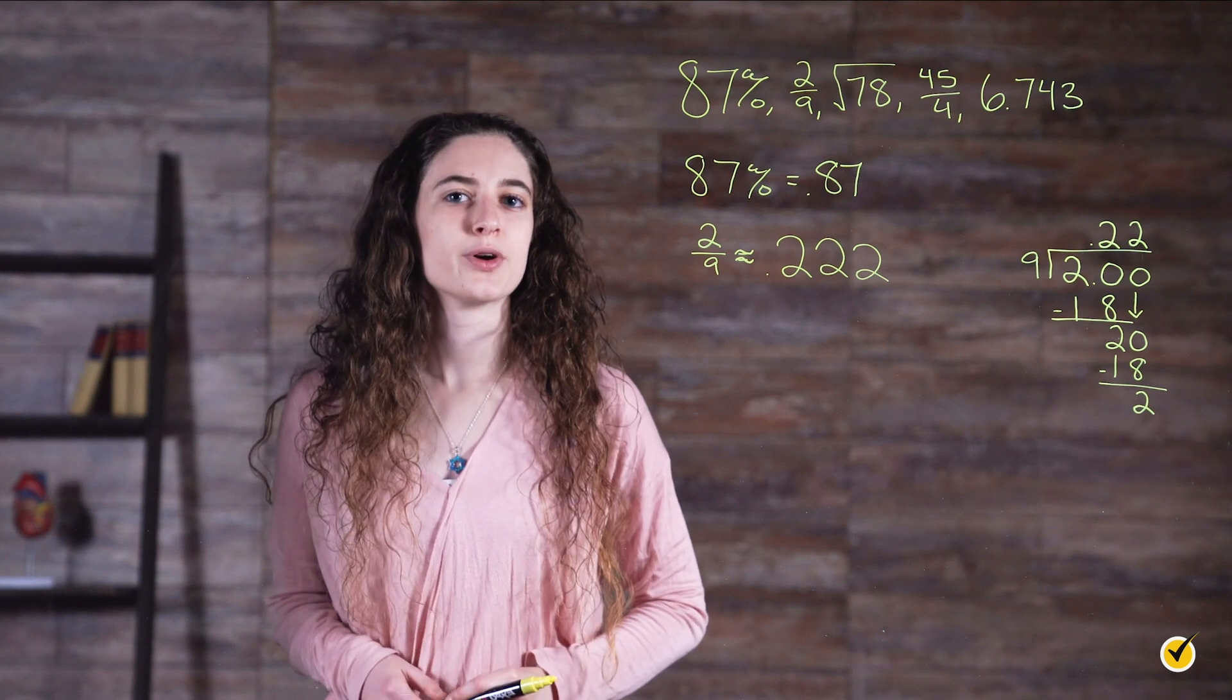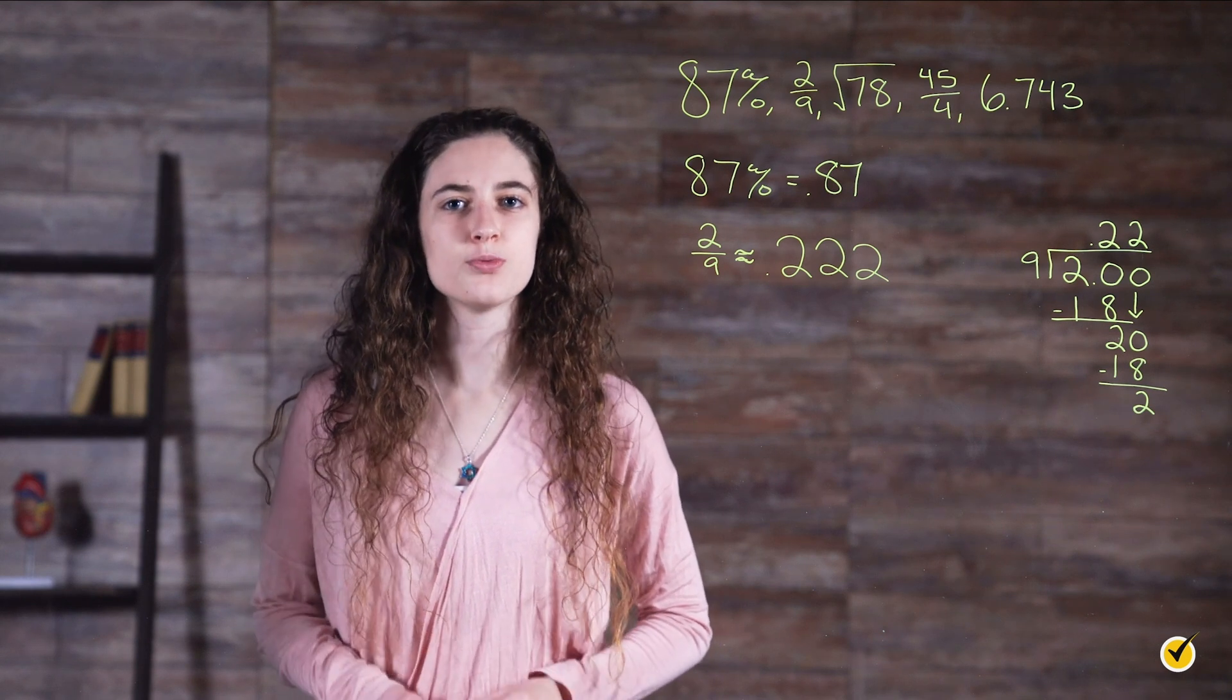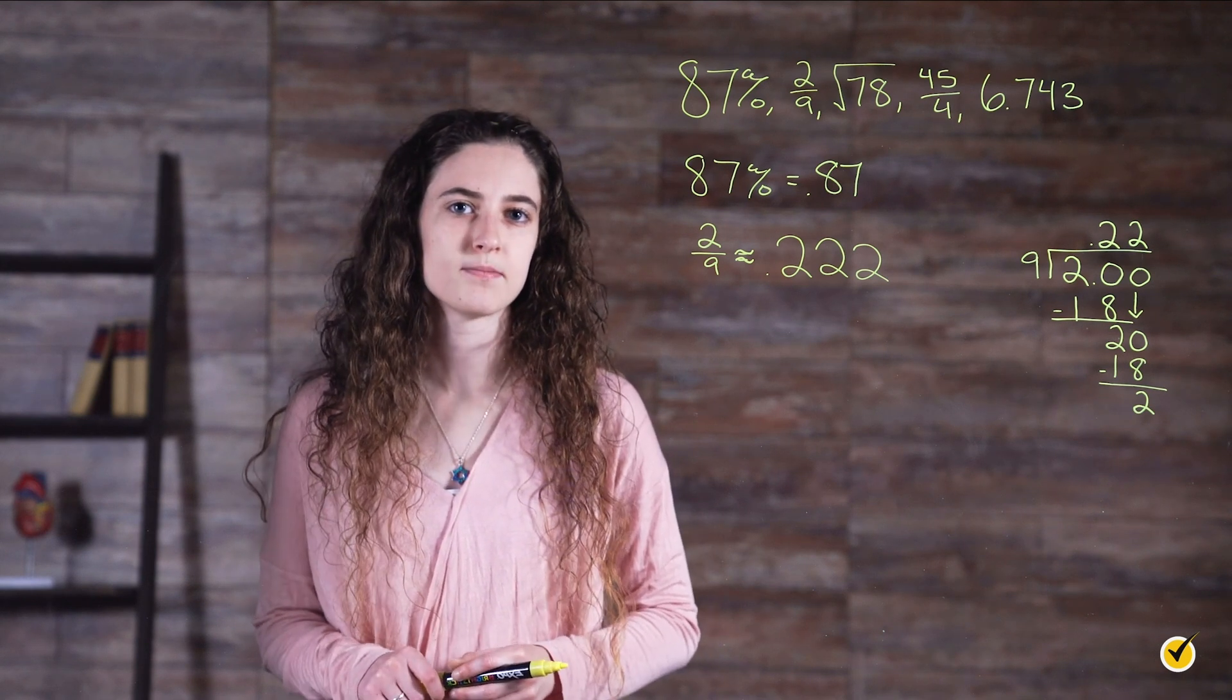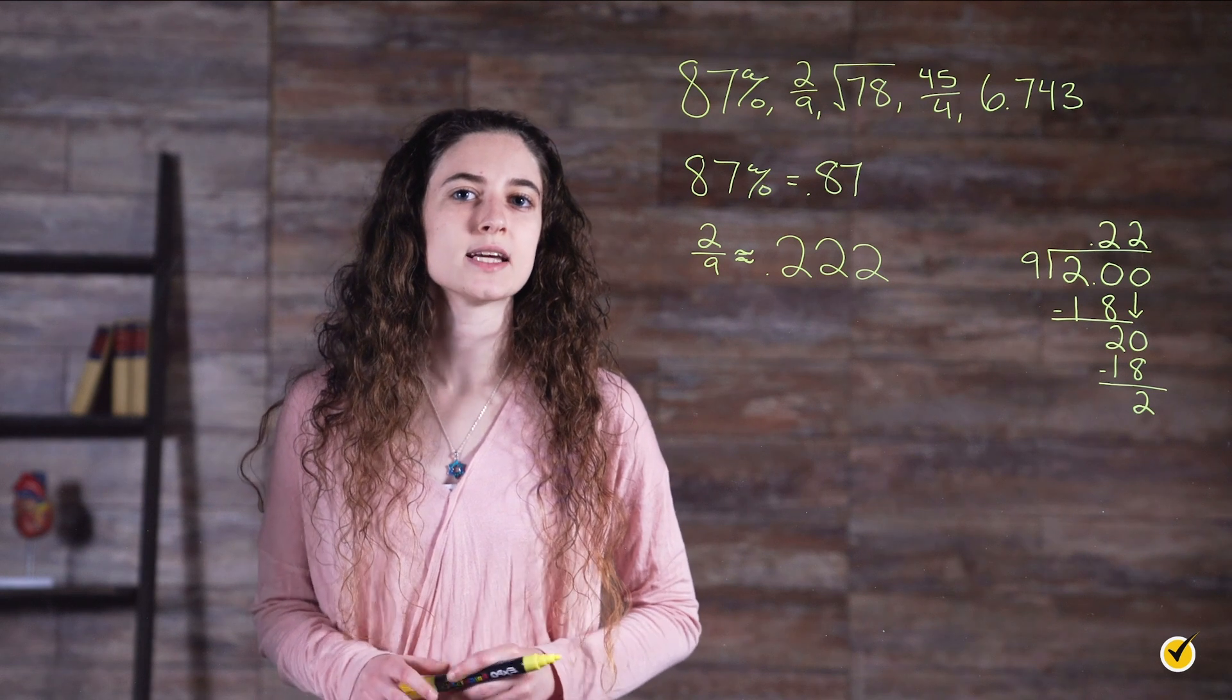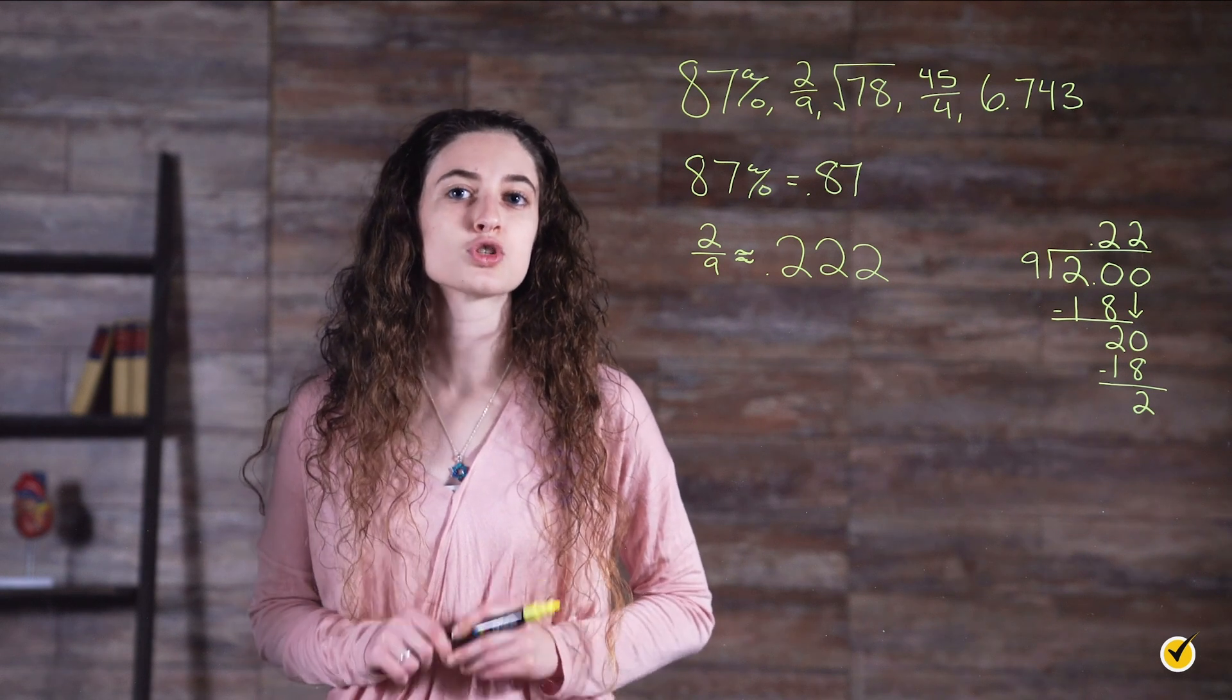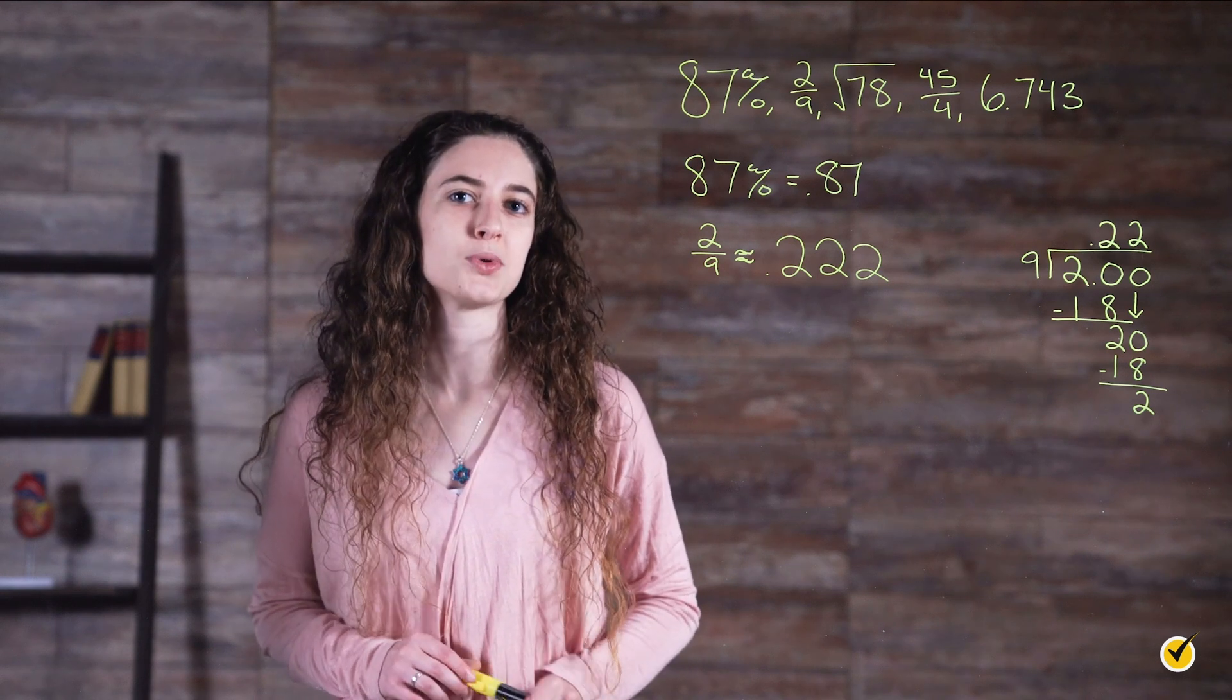When we look at a square root, remember we want to look for the two perfect squares the number falls between. Seventy-eight falls between the perfect squares sixty-four and eighty-one, which are the squares of eight and nine, respectively. So the square root of 78 falls somewhere between eight and nine.